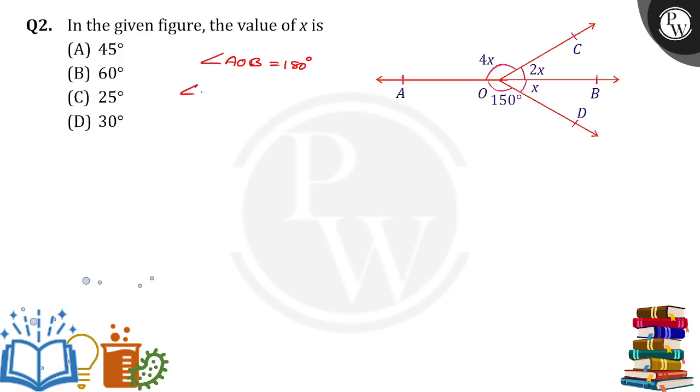Here AOB is nothing but angle AOC plus angle BOC is equal to 180 degrees. AOC is how much? 4X. BOC is 2X. So 4X plus 2X is equal to 180 degrees.